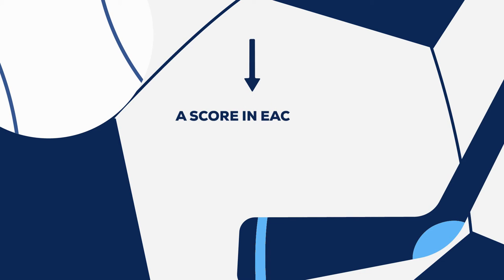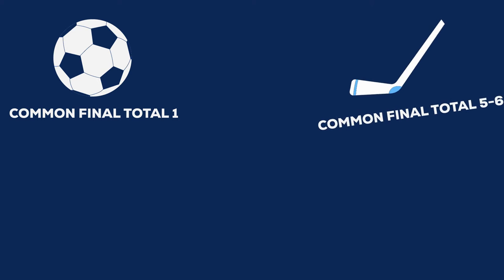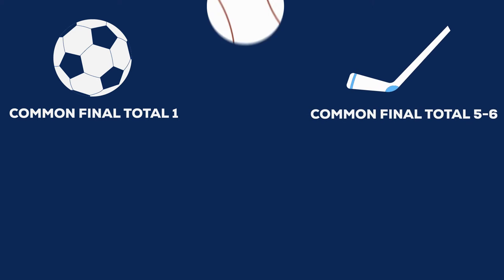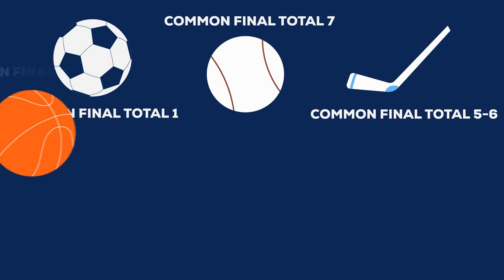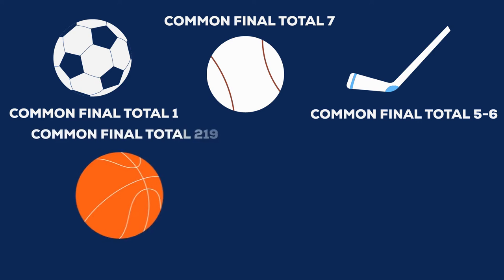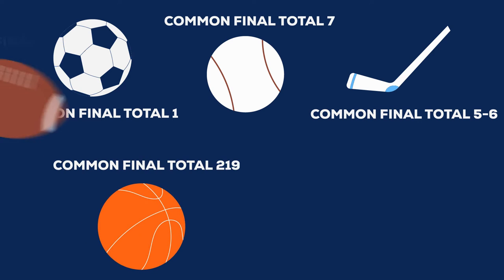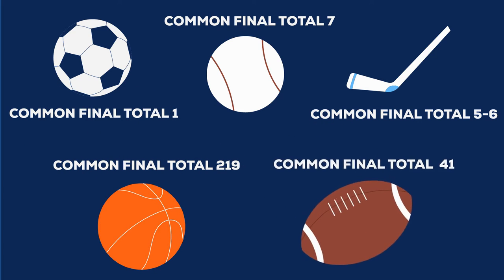Soccer, hockey, and baseball will have lower totals, which makes sense because a score in each of those only counts as one point. In soccer, the most common final total over the last five years has been one. In hockey, it's somewhere between five and six, and in baseball it's seven — very different from the NBA, which is 219, and the NFL, which is 41.